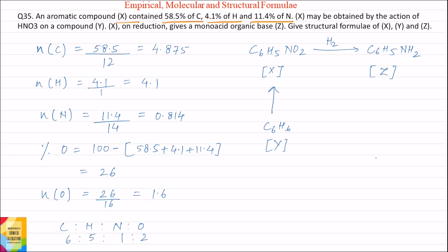X may be obtained by the action of HNO3 on a compound Y. X on reduction gives a mono-acid organic base Z. Give structural formula of X, Y and Z.